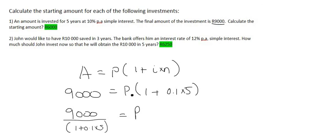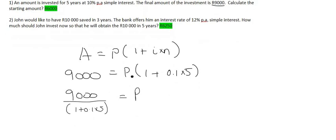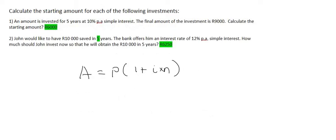Then what you can do is type all of that on the calculator and get a final answer of 6,000 Rand. That means the person started with 6,000 Rand, invested for five years to get a final amount of 9,000 Rand.